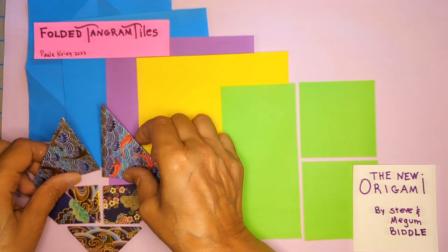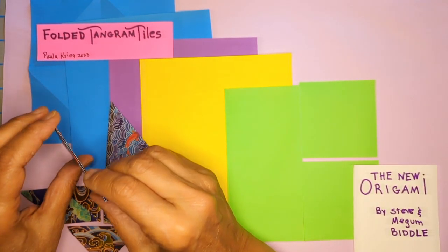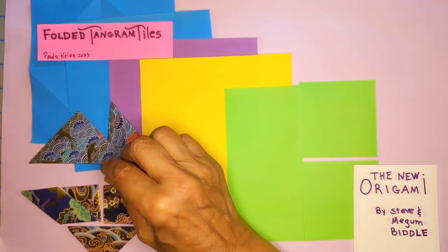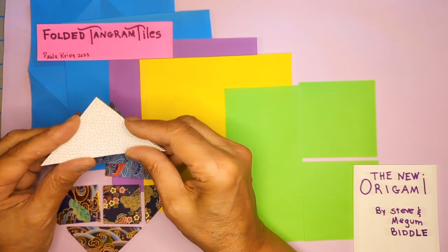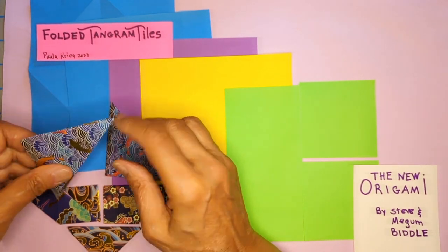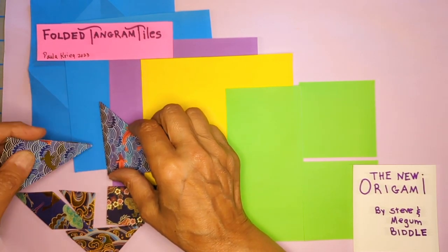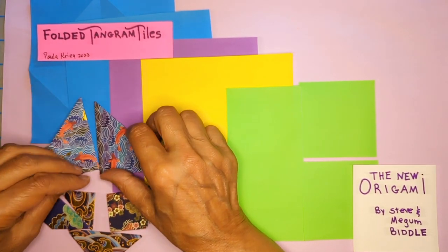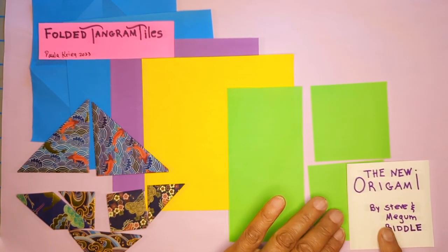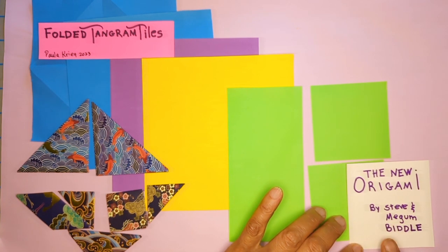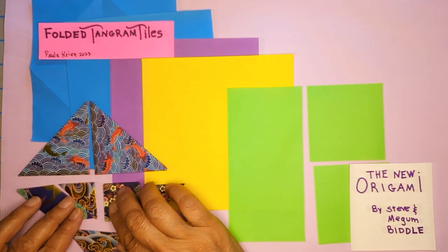When I was visiting the book artist Hedy Kyle, she had tangrams that she had folded. Although I really like working with these paper tangrams that I cut out, there's something about her folded ones that have a little bit more heft, and I just love them. So I asked her how she did it. She uses this book, The New Origami by Stephen and Megan Biddle, and I have since seen other directions.